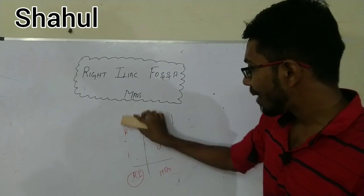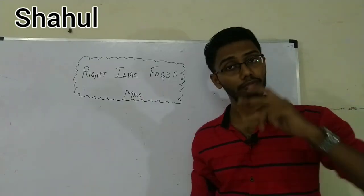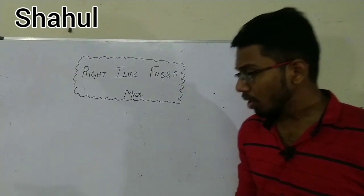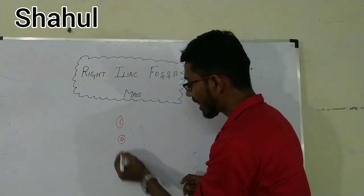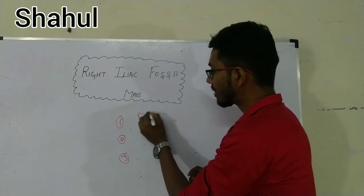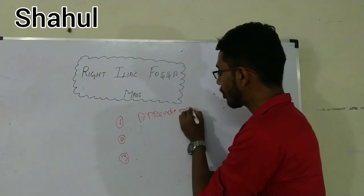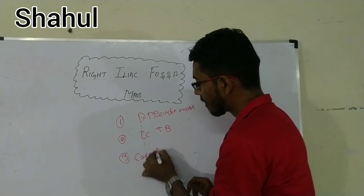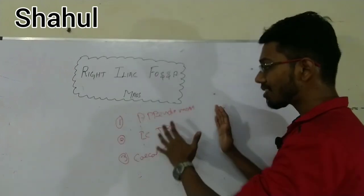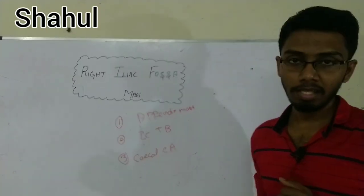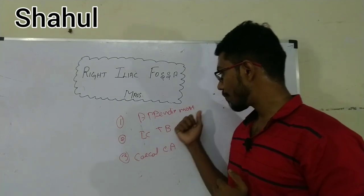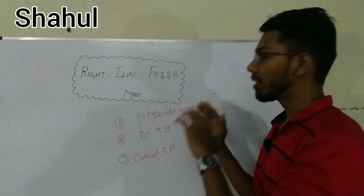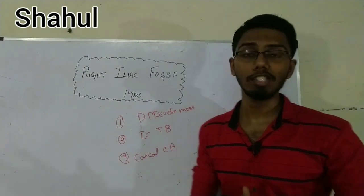From an exam point of view, we need to concentrate very importantly on two swellings and one additional important swelling. The three important masses to concentrate on for exams are: number one, appendix mass; number two, ileocecal TB; and number three, cecal carcinoma or CA cecum. We are going to see the features of appendicular mass, ileocecal TB, and carcinoma cecum.